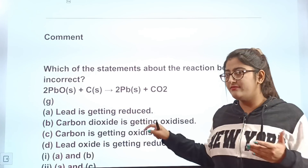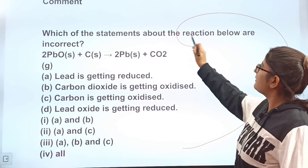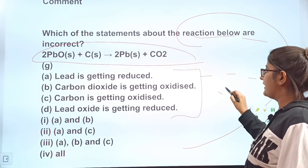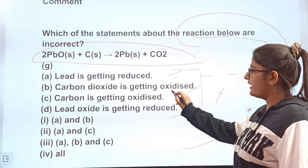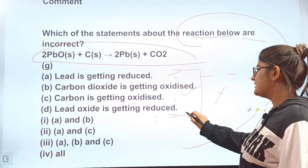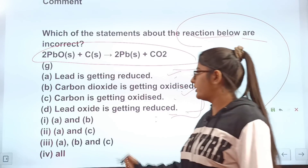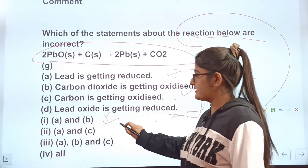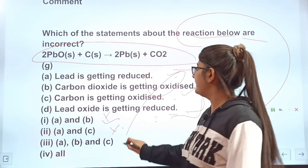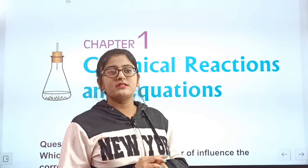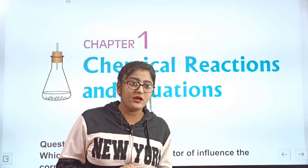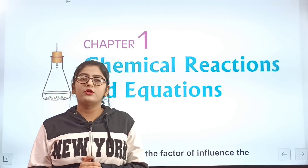Best of luck! Here's one bonus question to answer in the comments: which statements about the reaction below are incorrect? Statement A: lead is getting reduced. Statement B: carbon dioxide is getting oxidized. Statement C: carbon is getting oxidized. Statement D: lead oxide is getting reduced. Find the incorrect ones and write the correct answer in the comments. If this video helped you, do tell me in the comments, and I'll see you in the next video!